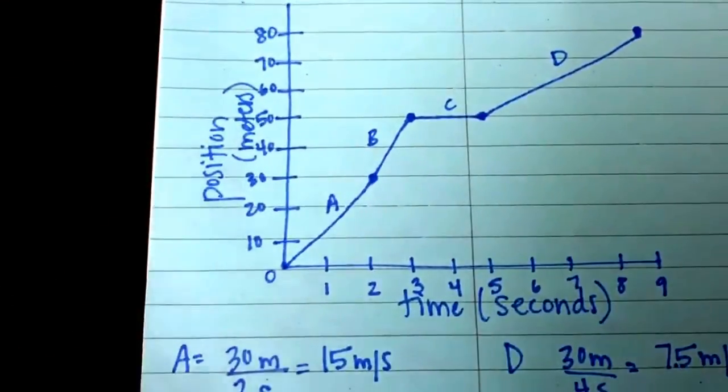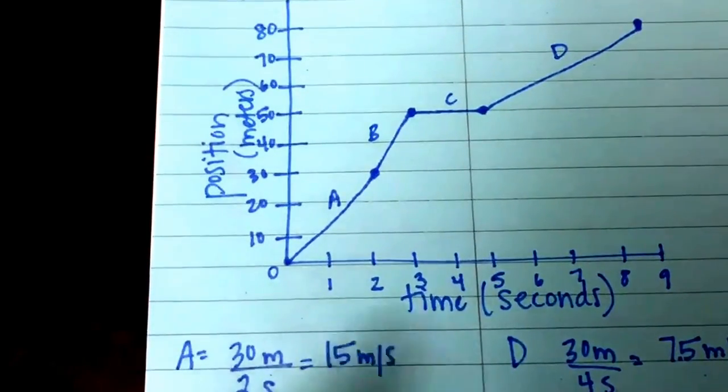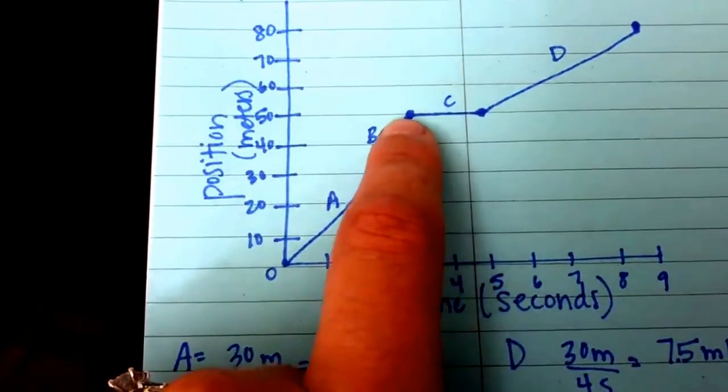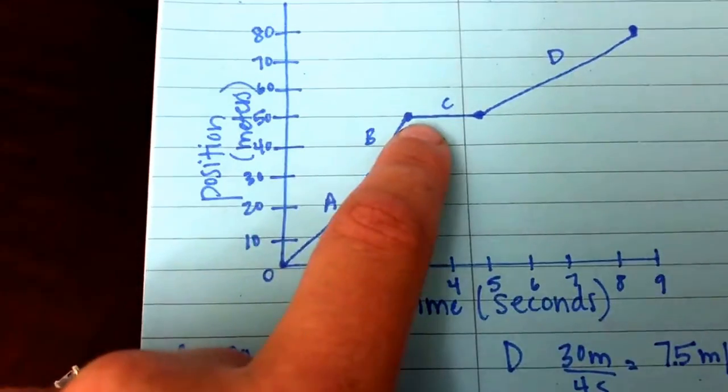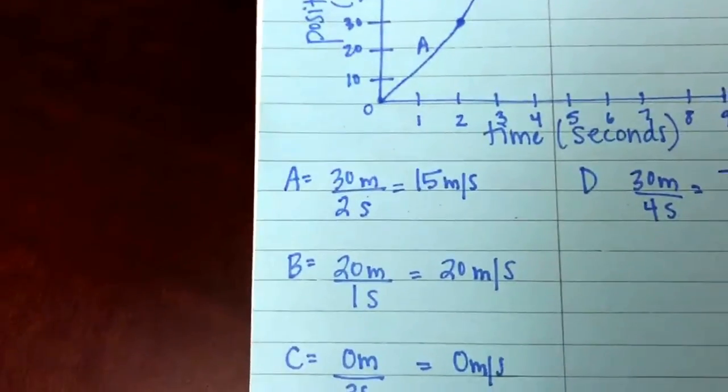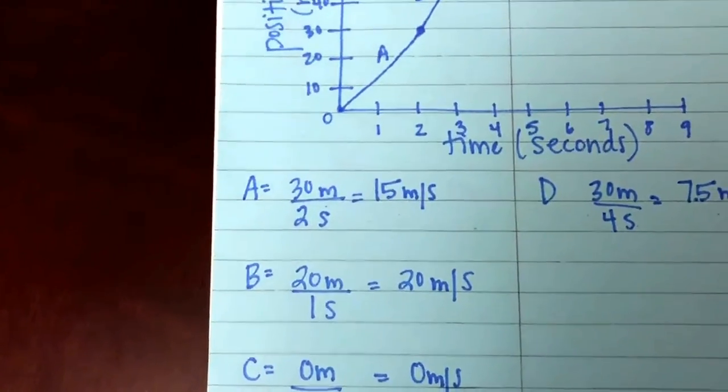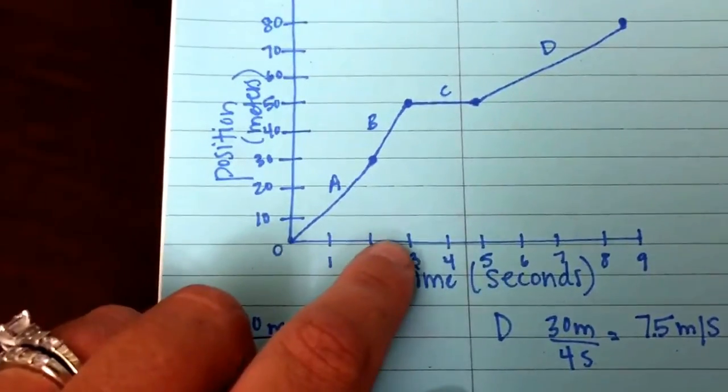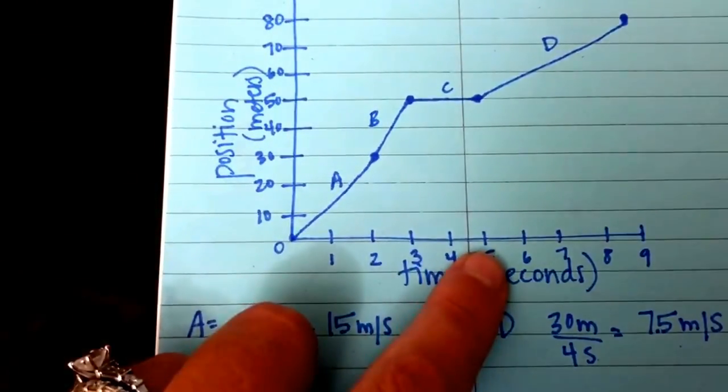Then letter C. We already know that the answer is zero, but they traveled from 50 meters to 50 meters. So they didn't go anywhere, zero meters. And in that amount of time from 3 seconds to 5 seconds, which is 2 seconds, the speed is zero.